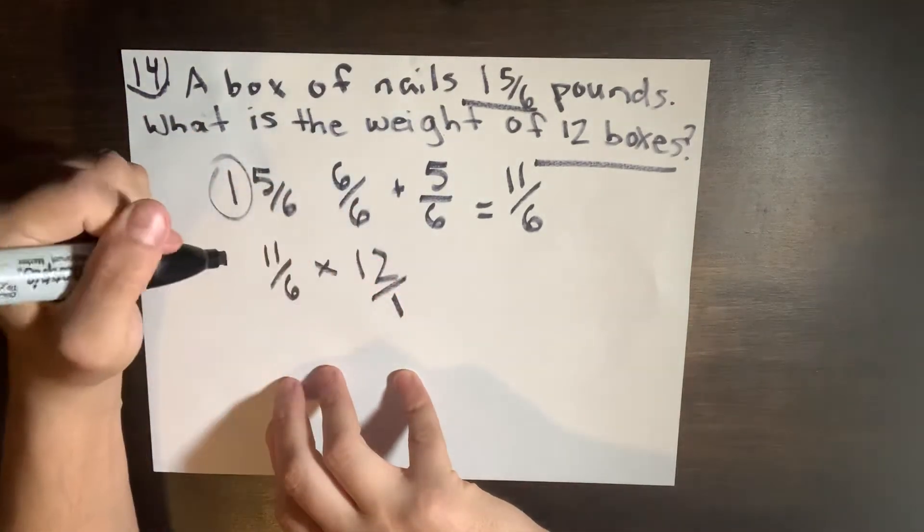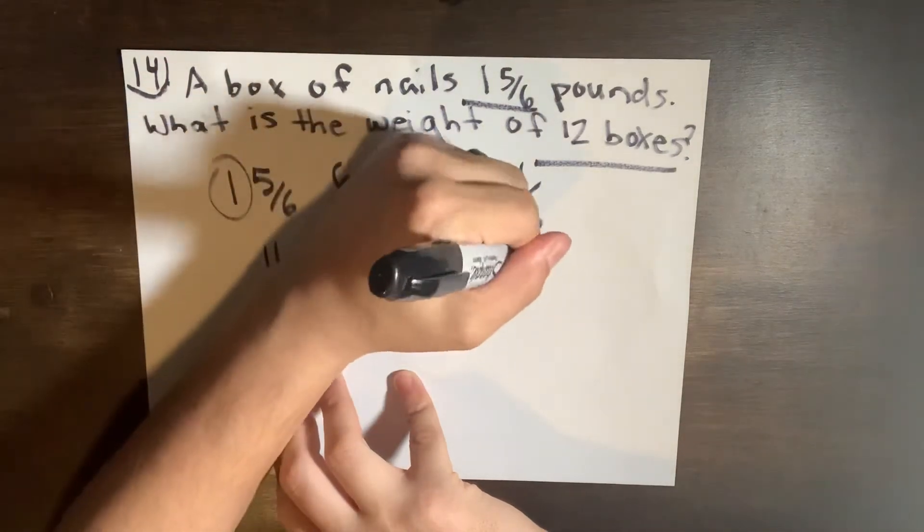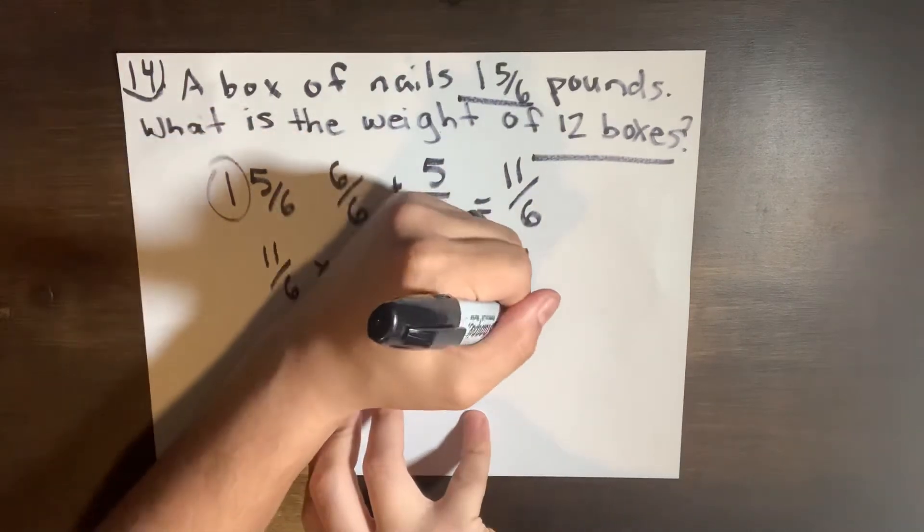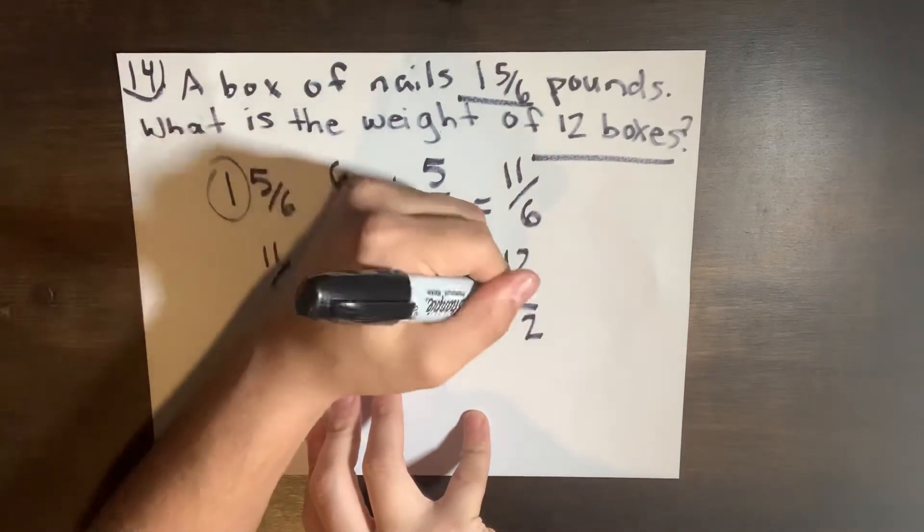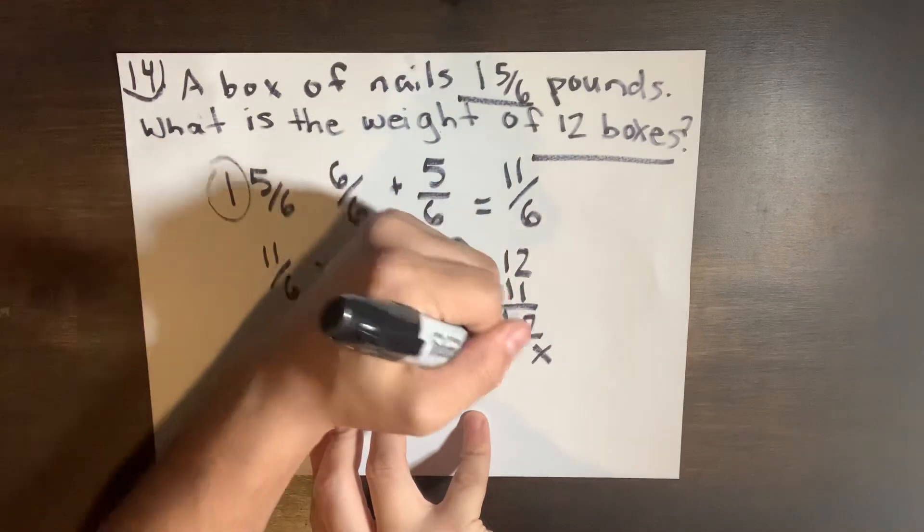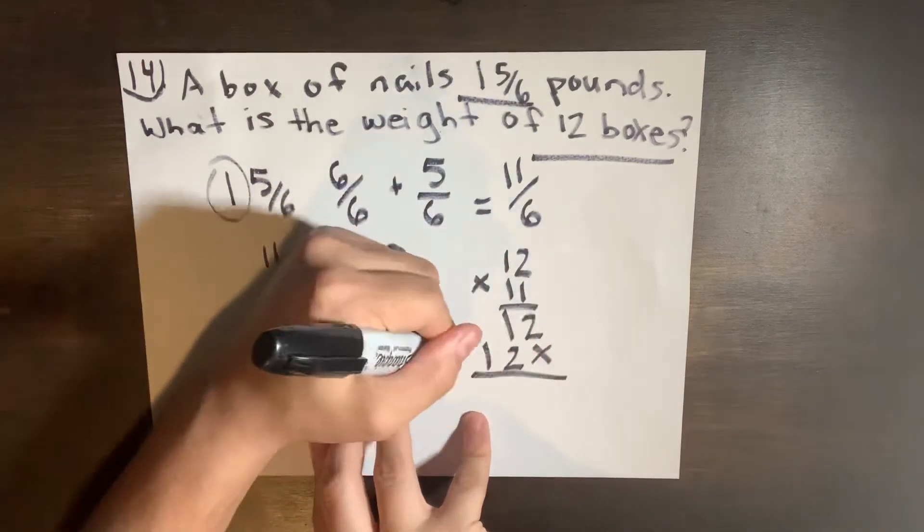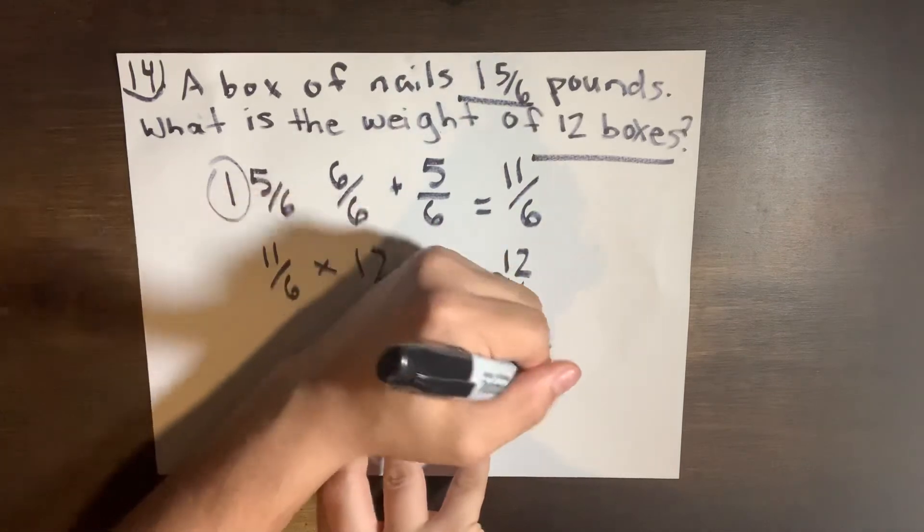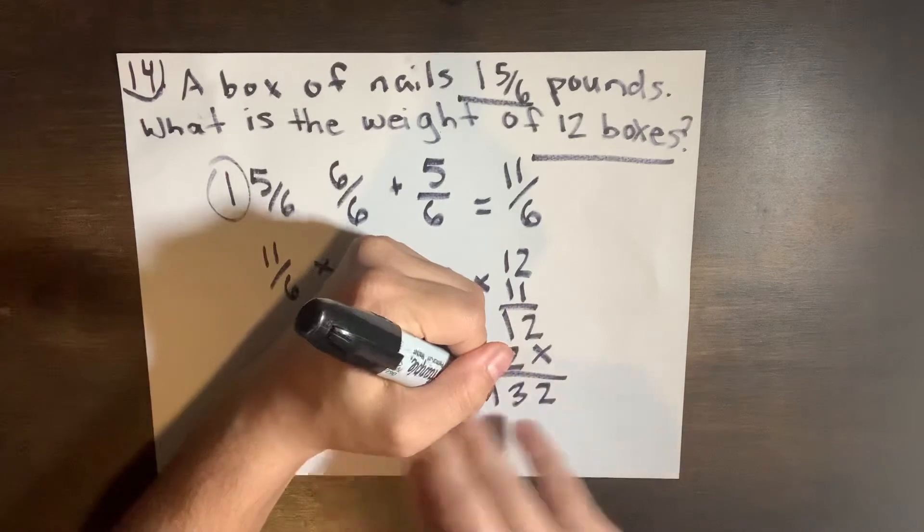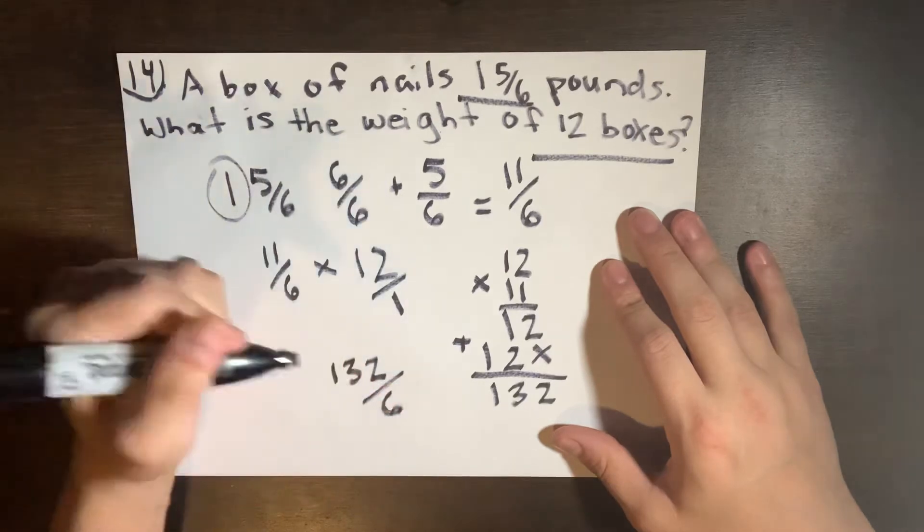First we're going to do the top: 12 times 11. So one times two is going to be two, one times one is going to be one, put a zero, one times two is going to equal two, one times one is going to equal one. Now we're just going to add these, so two, three, one. So now we have 132/6.